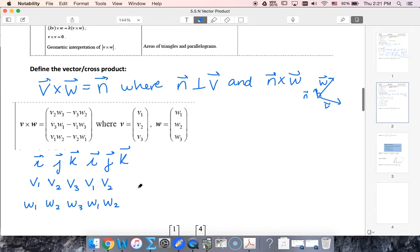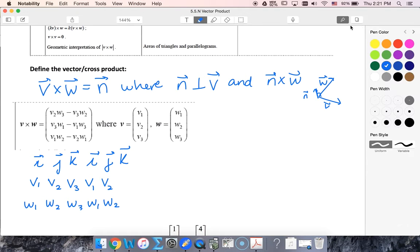One way to remember this is that I'm going to take my major diagonals and sum them. So major diagonal, major diagonal, major diagonal. Then I sum those and subtract my minor diagonals: minor, minor, minor.